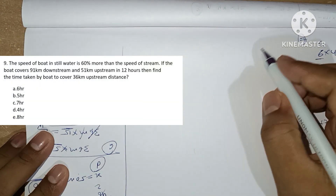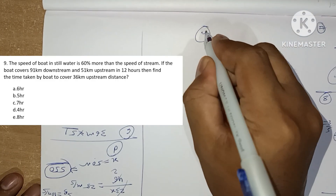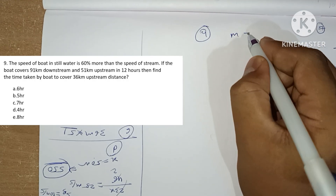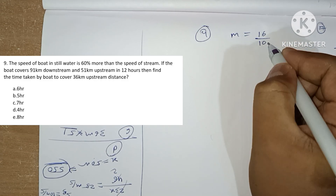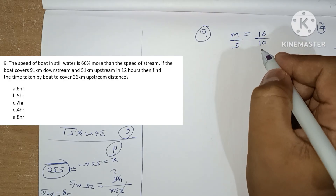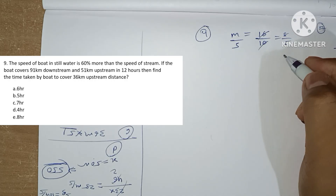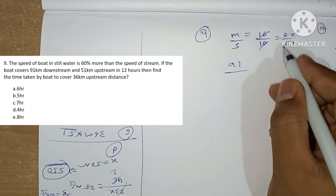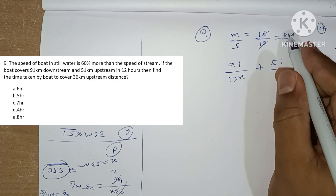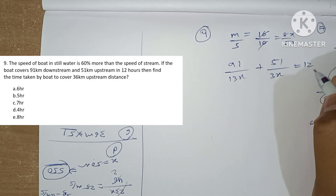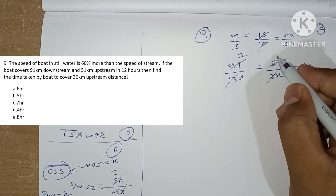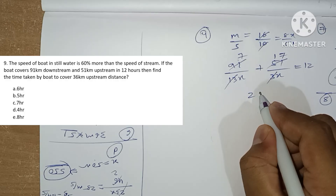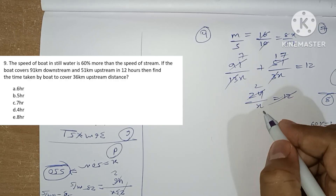Question number 9: the speed of the boat in still water is 60% more than the speed of the stream, giving a ratio of 8 to 5. Let speeds be 8x and 5x. The boat covers 91 km downstream (speed = 8x + 5x = 13x) and 51 km upstream (speed = 8x - 5x = 3x). Total time equals 12 hours: 91/13x + 51/3x = 12, so 7/x + 17/x = 24/x = 12, giving x = 2.